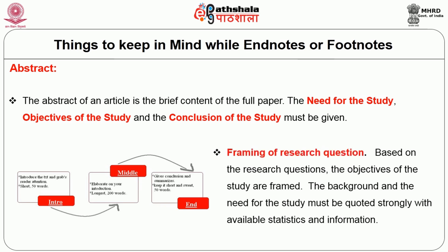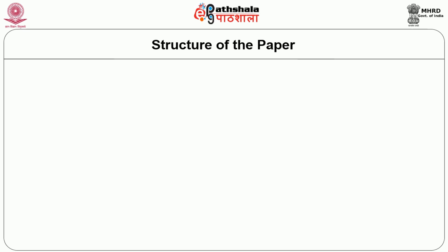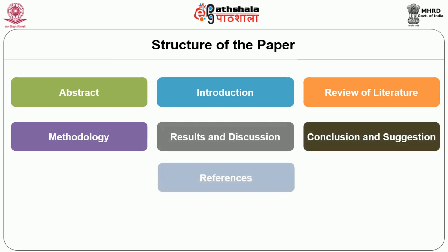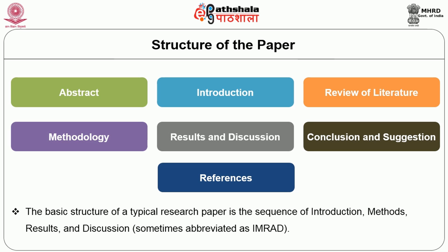How to write an article: First, frame the research question. Based on the research questions, the objectives of the study are framed. The background and the need for the study must be supported with available statistics and information. The structure of the paper usually includes the abstract, introduction, review of literature, methodology, results and discussion, conclusion, suggestions, and references — following the IMRAD format: Introduction, Methods, Results, and Discussion.